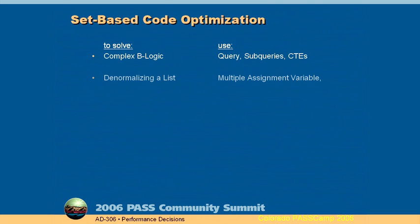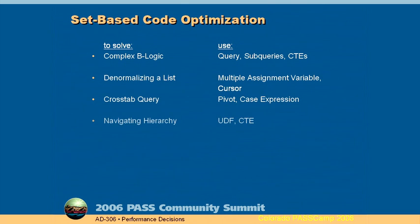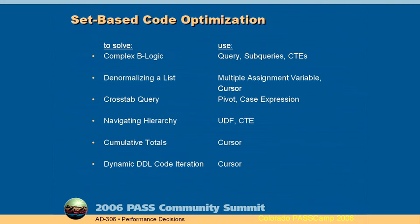Here's a list of some types of problems and what I recommend to solve them. For complex business logic, use queries, subqueries, CTEs, and user-defined functions. To denormalize a list, use a multiple assignment variable. For crosstab queries, use pivot or a case expression — avoid using the correlated subquery for crosstabs. For navigating hierarchy, I recommend using a UDF. For cumulative totals, use a cursor — avoid the correlated subquery method, as the cursor will scale much better. Cursors are also useful when building dynamic code that iterates over DDL, like manually creating tables, though that's rarely needed in a normal application.